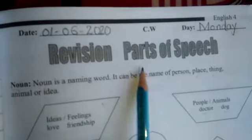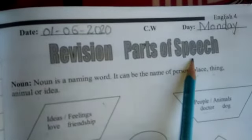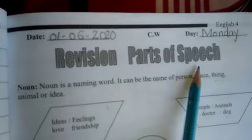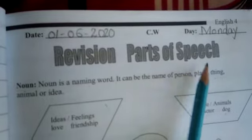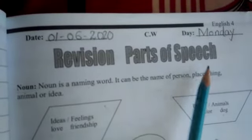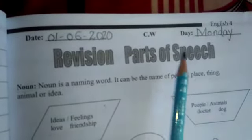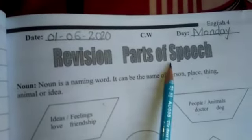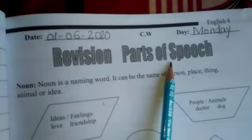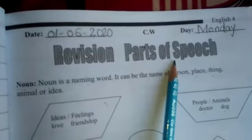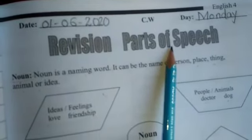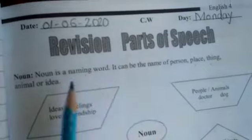Seven parts of speech. English grammar is divided into different parts of speech, which enable us to describe the function of a word or words in a sentence. Now look at the different categories of the parts of speech.